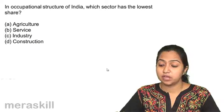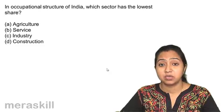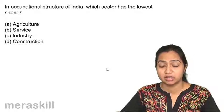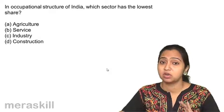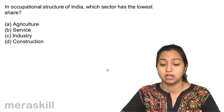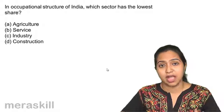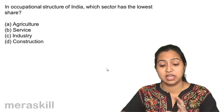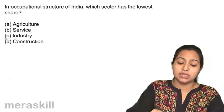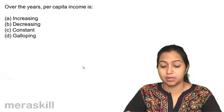In occupational structure of India, which sector has the lowest share? These types of questions are to be read very carefully. They are asking about the occupational structure, they are not asking about the contribution of the sector in the GDP. What is a prime occupation? Agriculture, nearly 50% of the population is still in agriculture. Which sector has the lowest share? Right now it is industry. Industry has the lowest share in the occupational structure.